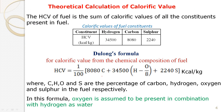Now we come to the theoretical calculation of calorific value. This theoretical calculation can be done using Dulong's formula. The HCV of a fuel is determined from the total fuel composition. It is defined as the sum of the calorific values of all the constituents present in the fuel.